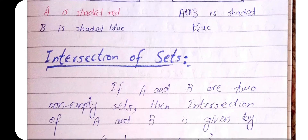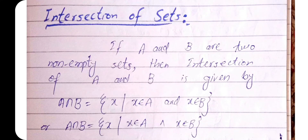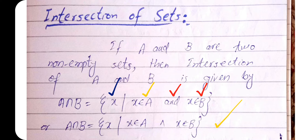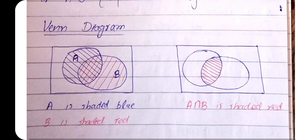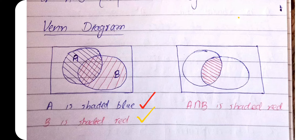Intersection of sets: if A and B are two non-empty sets, then the intersection A ∩ B consists of all elements x such that x belongs to A and x belongs to B. In the case of intersection we use 'and', while for union we use 'or'. On the Venn diagram, the intersection is represented by the common shaded region that belongs to both sets A and B.